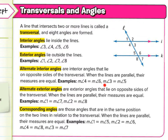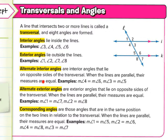And measure of angle three equals measure of angle five. You can see this is an acute angle here and the same acute angle appears there. Here you have an obtuse angle and an obtuse angle. I'll draw that out on the board in class so you might understand it better.